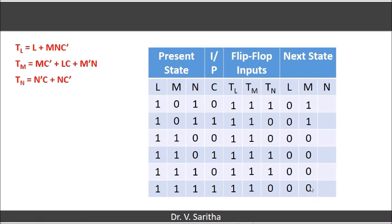So we will get 110000. And then Tn is N bar C plus NC bar, that is N exclusive OR C. We get the Tn value like 100110.